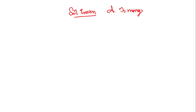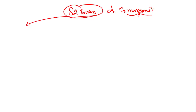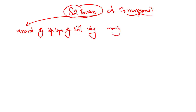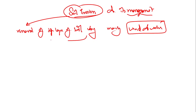Soil erosion and its management - we can manage soil only once we know what soil erosion is and how it happens. In very easy language, soil erosion is the removal of the top layer of soil, mainly by wind and water. So basically we have water erosion and we have wind erosion.